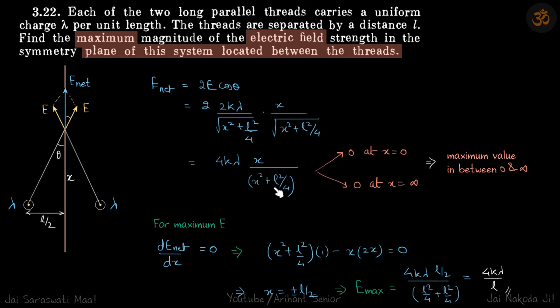If you put infinity here, this should also be 0. Which means we should get a maximum value of electric field somewhere between 0 and infinity. To find that, we are going to differentiate this with respect to x and equate it to 0.